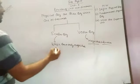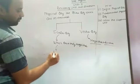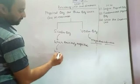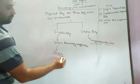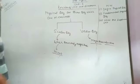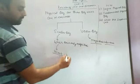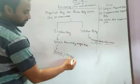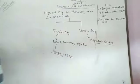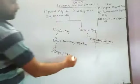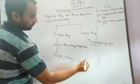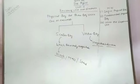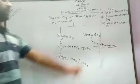Examples of scalar quantities are work, mass, and speed. These are the scalar quantities.